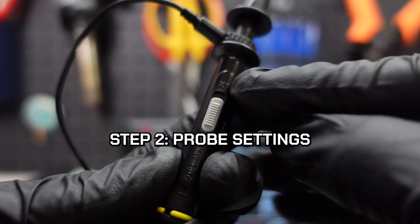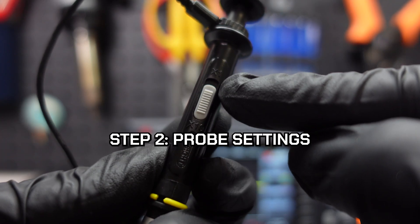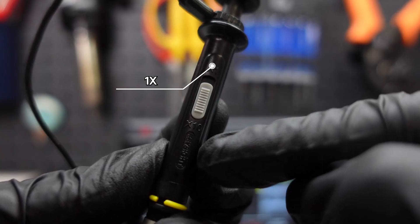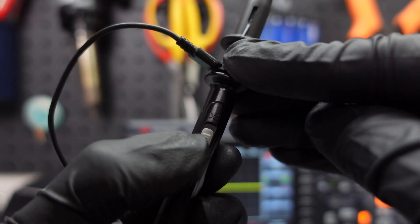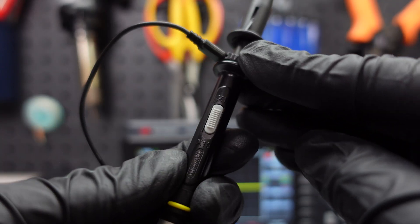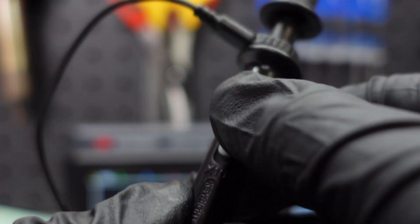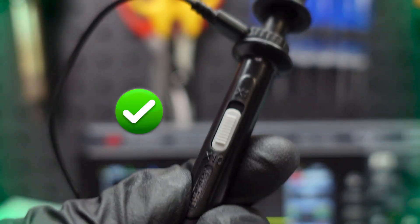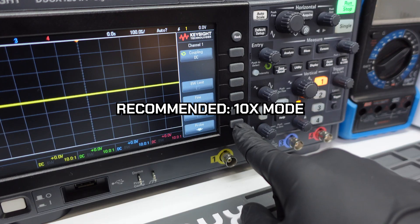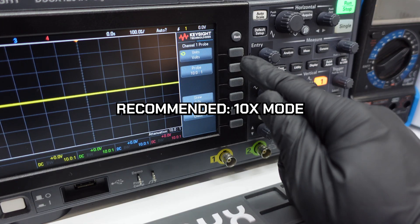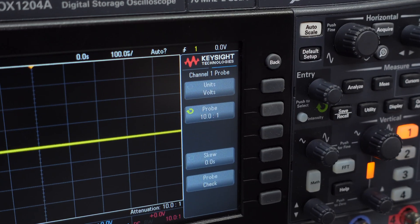Next, you want to use the right probe settings. So your oscilloscope probe actually has two settings: 1x and 10x. 1x mode gives you direct signal measurement, but reduces your bandwidth and can mess with your circuit. 10x mode reduces the loading effects on the circuit and gives you the full bandwidth of your oscilloscope. So use 10x mode for most measurements and make sure that the oscilloscope is also set to 10x.